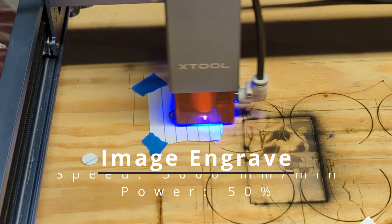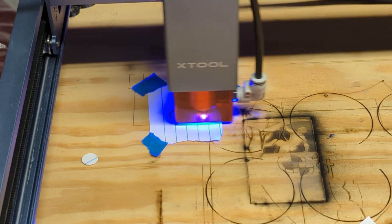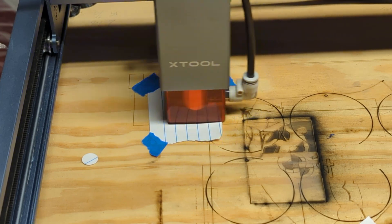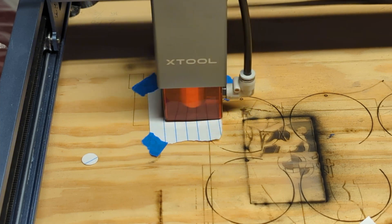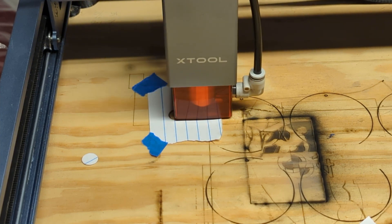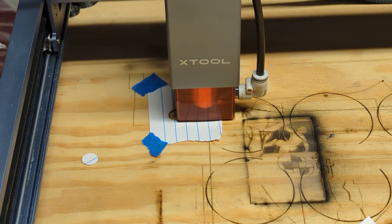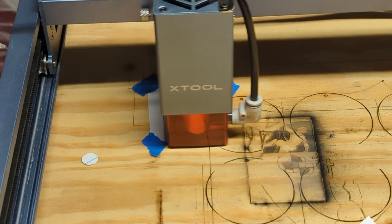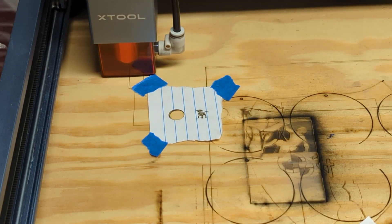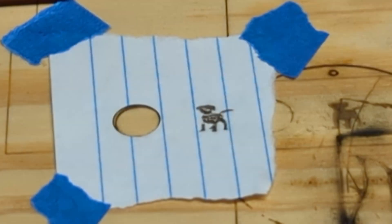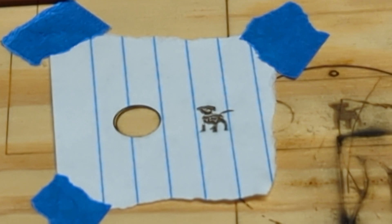The actual image engraving itself, nothing to write home about. It's actually pretty spotty, although I do suppose if you were to lower your power you might get better results. I think the speed was probably up too high but it's most likely doable.